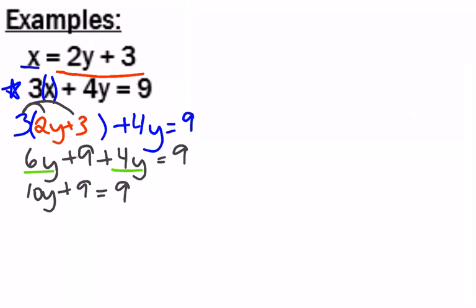And then it's a two-step equation. Subtract 9 from both sides. So 10y equals 0. And my last step is to divide by 10. Now that doesn't mean it's no solution. It means it's 0. 0 is a number.